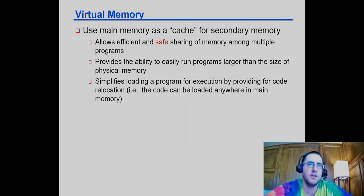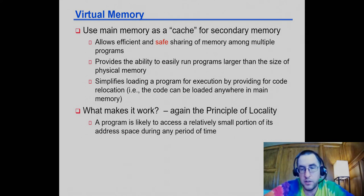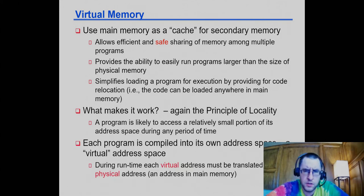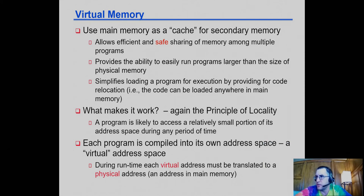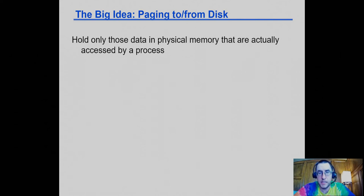I'm going to skip the evolution of virtual memory mechanisms and focus on modern approaches. Virtual memory works because of the same reasons that caches work in general — the principle of locality, temporal and spatial locality. A program is likely to access code and data nearby in time and space. A program is compiled to use virtual addresses; when you look at the disassembly, those addresses are actually offsets from the start of the program as a virtual address, which get added to the base address of where the program is placed in memory.